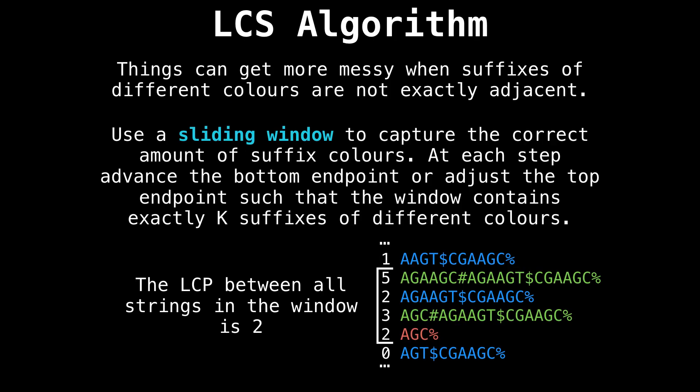So far, we've covered only some trivial cases. Things get much messier when not all the different colors you need are exactly adjacent with each other. A trick we will use to overcome this will be to use a sliding window technique to capture the correct amount of suffix colors.